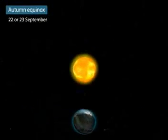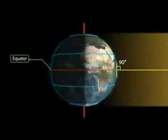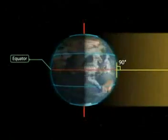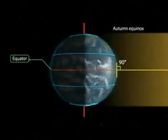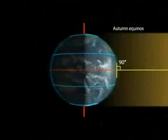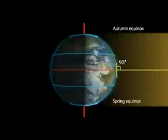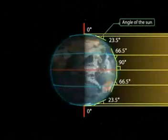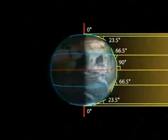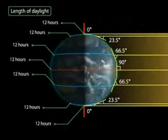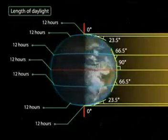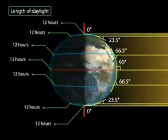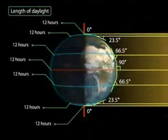Autumn Equinox: On the 22nd or 23rd of September, the overhead sun is over the equator again. The equator receives the largest amount of solar radiation. On this day, the northern hemisphere is in the autumn equinox, while the southern hemisphere is in the spring equinox. The angle of the sun decreases towards the poles. The two hemispheres receive a similar amount of solar radiation, and the length of day and night is the same at all places on the Earth.